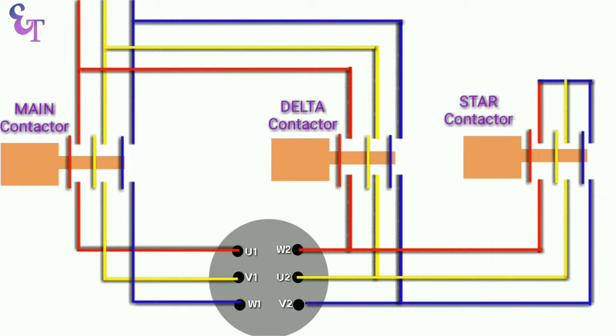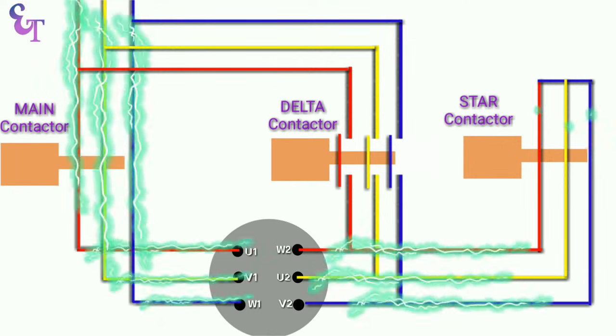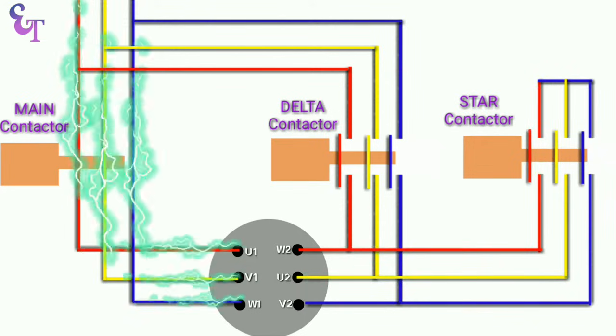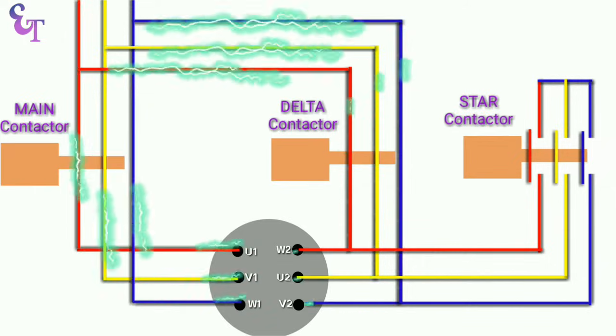When we press start push button of star delta starter then first of all star contactor operates. Star contactor operates first so that motor winding get connected in star first. When star contactor is operated, after some milliseconds main contactor is turned on. Now motor is turned on in star connection. When motor reaches its 80 percent speed then timer turn off the star contactor and it turn on delta contactor instantly. Now motor runs continuously in delta connection.